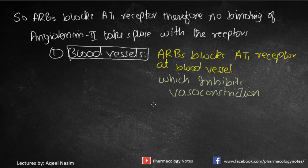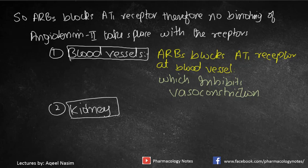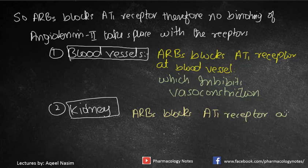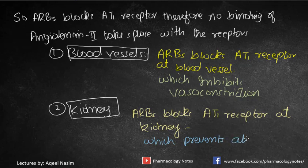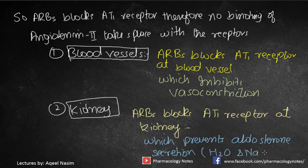The second pathway is at the kidney. AT1 receptors are present in the kidneys, and ARBs also block these AT1 receptors at the kidney site. This blockade of angiotensin receptors at the kidney site causes prevention of aldosterone secretion. Aldosterone is responsible for water and sodium retention.